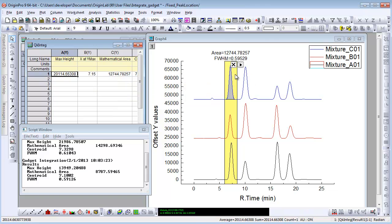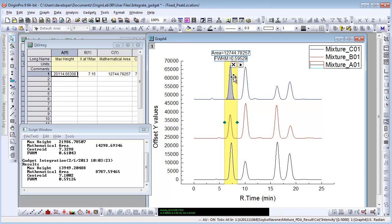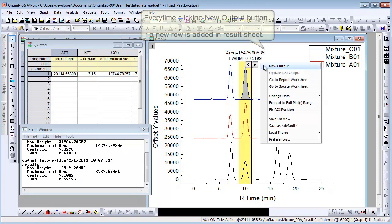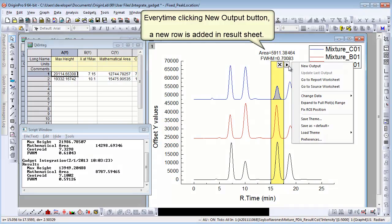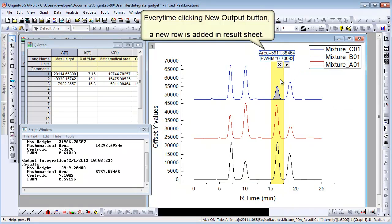Let's move the ROI box to Second Peak and choose New Output again. Another row is added in Output worksheet. So every time you click New Output button, a new row is added.